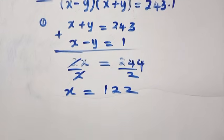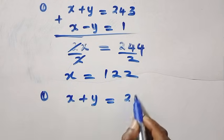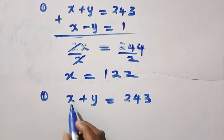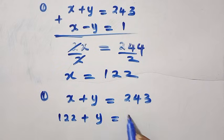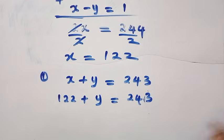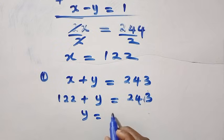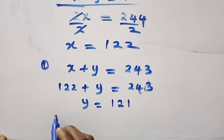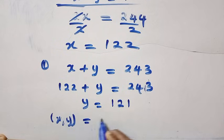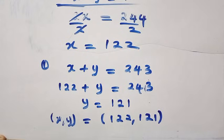And for y, taking equation 1, we have x plus y equals 243, and here x is 122. Replacing it, we have 122 plus y equals 243, and by subtraction we have y equals 243 minus 122, which gives us y equals 121.